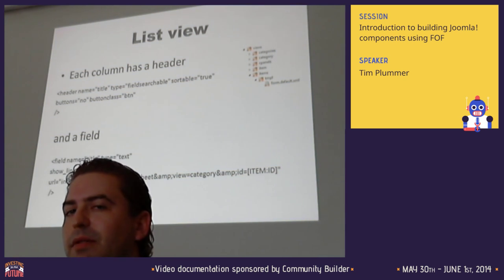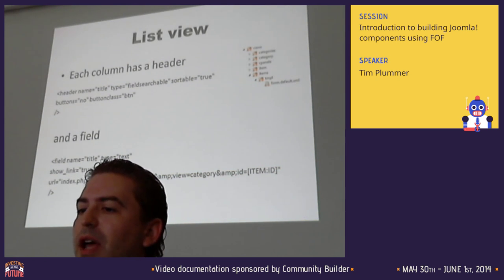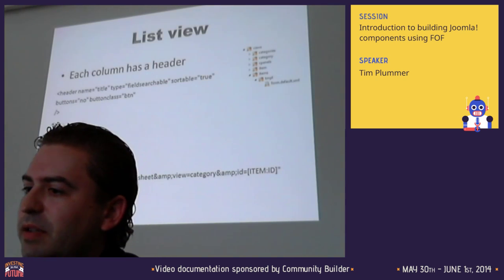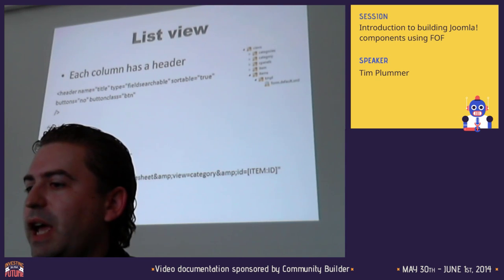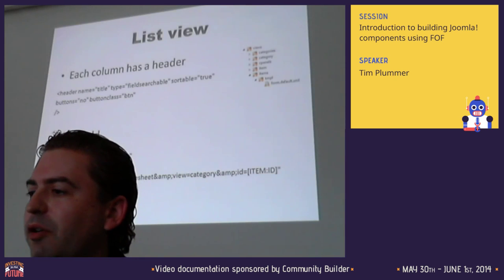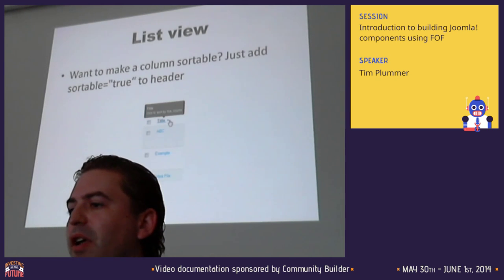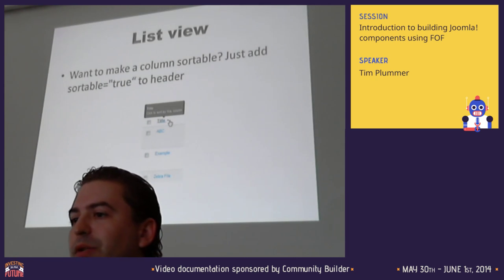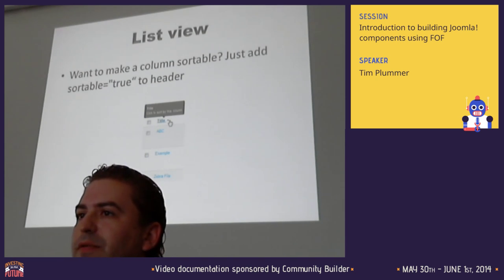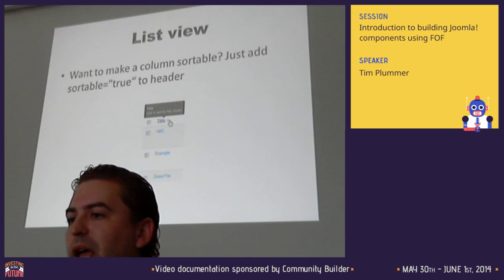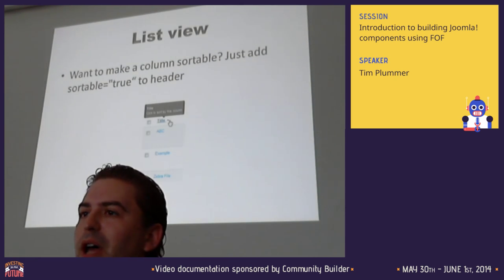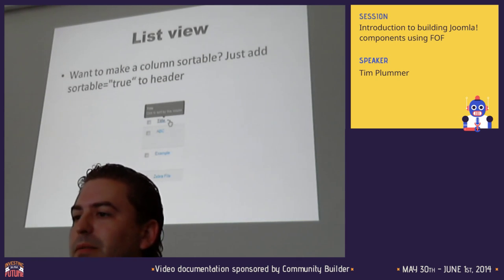The format of the XML file is simple: you define the header and then define the fields, which are the item rows. You define a title field with a link so that clicking it opens that particular item, passing through the item's ID. Making a column sortable is really easy - just add 'sortable=true' to the header. Adding view filters or searches is equally simple, just adding attributes to the header. In a traditional Joomla extension you'd have to go into the model and adjust the SQL query - FOF just makes that sort of thing remarkably easy.